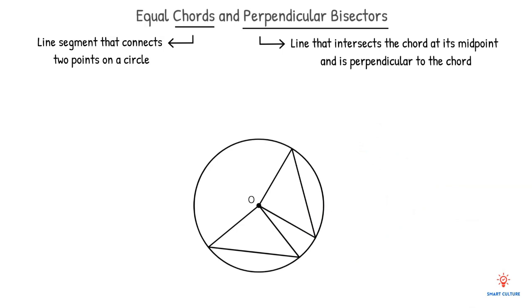Suppose we have a circle with center O and two chords AB and XY that are equal in length. We draw the perpendicular bisectors of both chords,